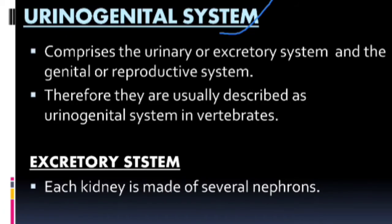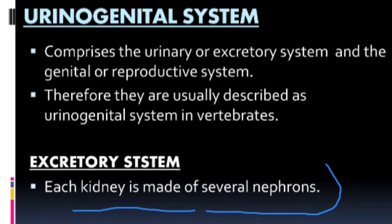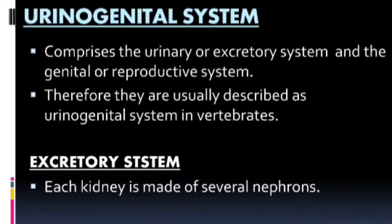What is the excretory system? The excretory system consists of a pair of kidneys. Each kidney is made up of several nephrons — the actual filtering units. A number of nephrons are present in each kidney. I have already drawn the diagram of the structure of a nephron.